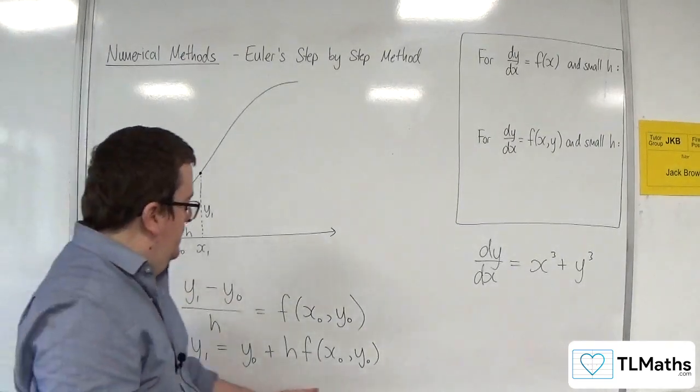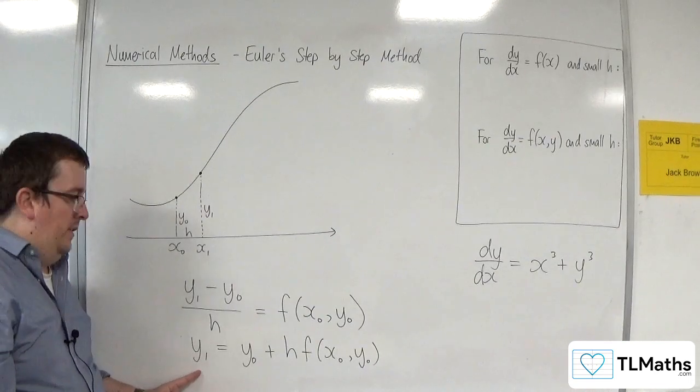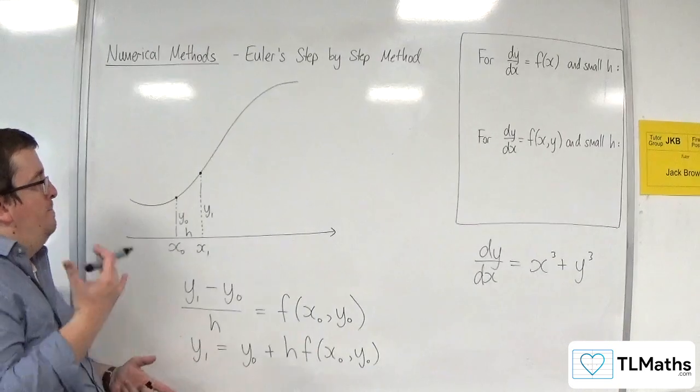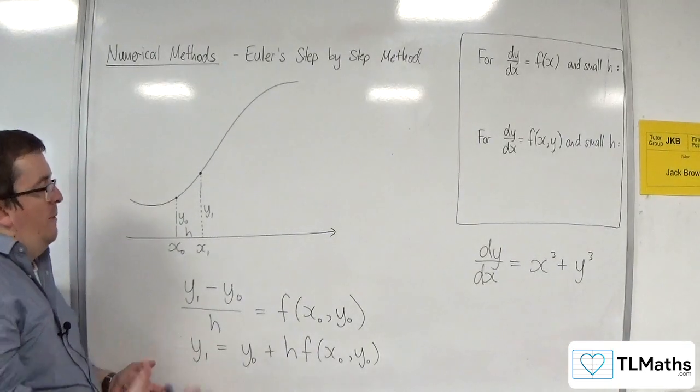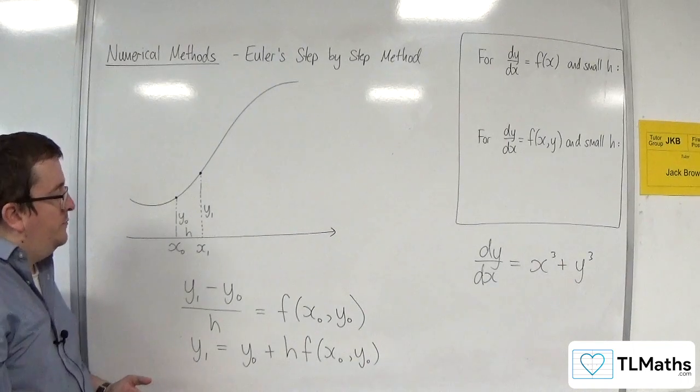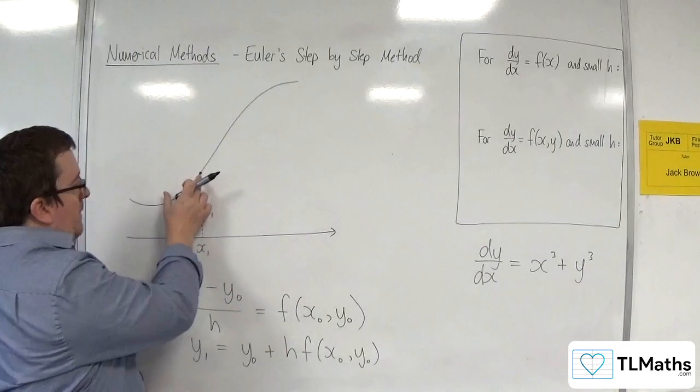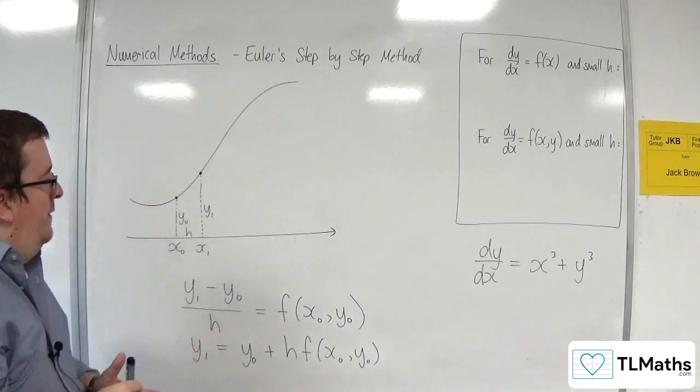And so here, I can get the next coordinate up. And of course, this is all dependent on how close h is, how small h is. That will give a better approximation. And of course, making sure that the curve is reasonably smooth as well will allow that to work.